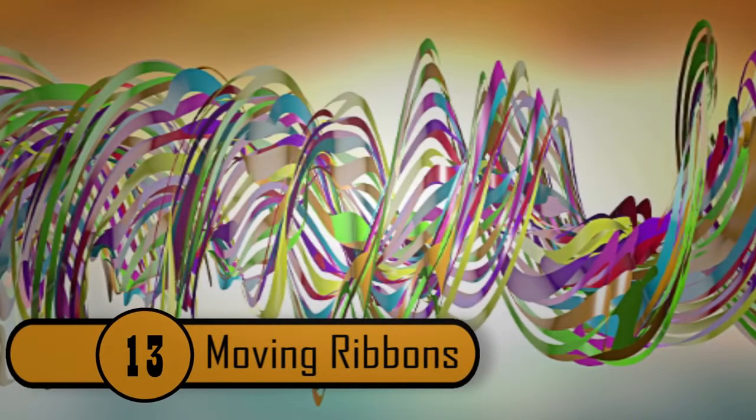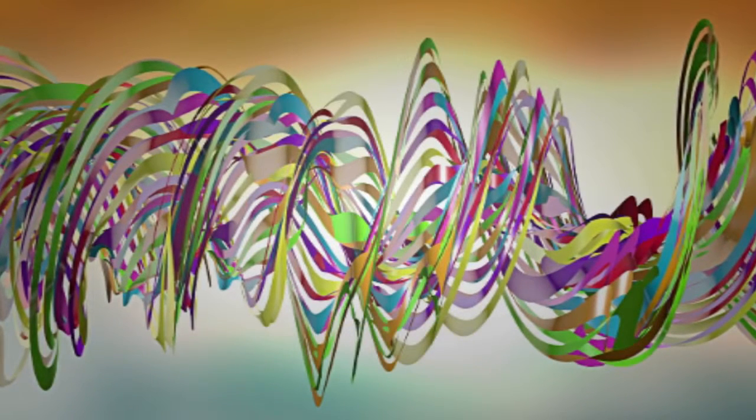Moving Ribbons. These checkered ribbons look as though they are moving when you stare at them. When you move your eyes, they stop. They're actually not moving at all. It's just an optical illusion.